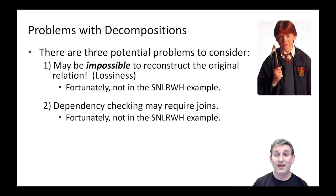A second problem is that dependency checking may require joins. Some of our functional dependencies from F, in order to check if they hold, we'll have to join together the two tables just to check the FD, and that would be pretty expensive. Fortunately, this is also not true in our SNLRH example, but it will be true in other examples we'll look at.